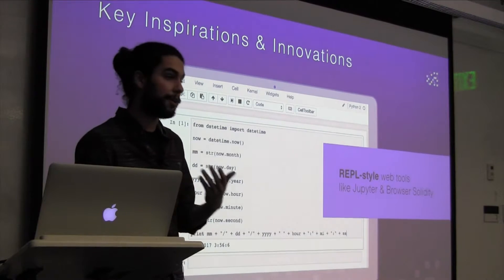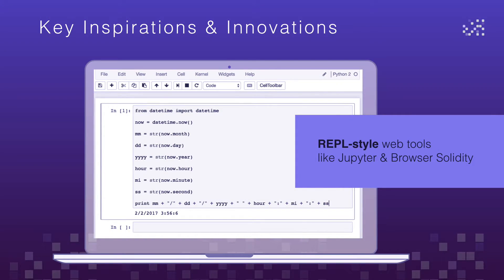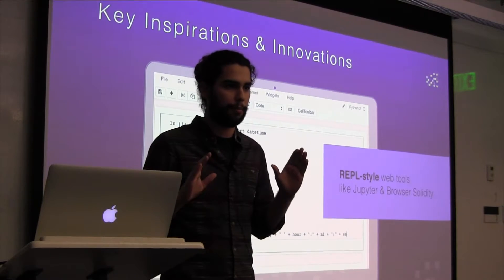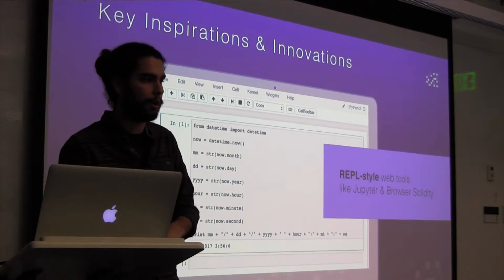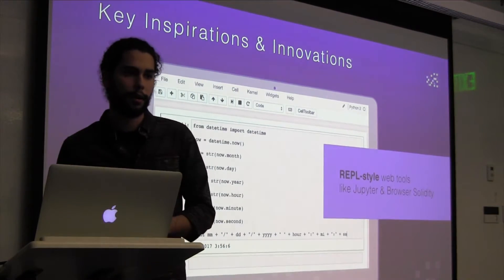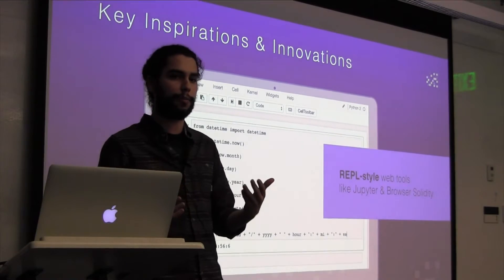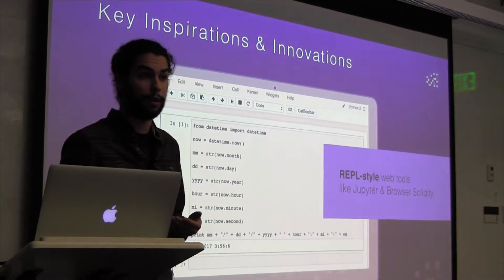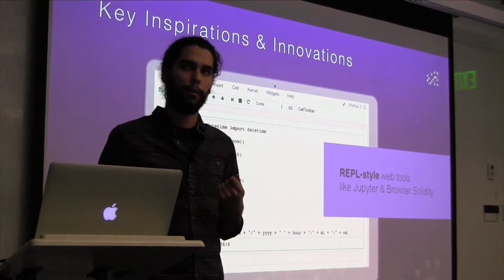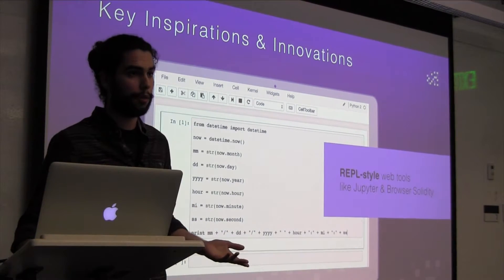Another inspiration is REPL style web tools. I'm sure many of you have used Browser Solidity before — Browser Solidity is awesome. Another one for Python is Jupyter. We think this is really cool. As soon as you create a terminal style developer tool, everybody's going to want a text editor. We like the idea of being able to pop up a very minimal but very rich programming environment where you can have JavaScript tools like ethdeploy, ethjs, web3, and Dapple's tools all loaded in context — just jump right into it in the web experience, going from nothing to programming in the environment instantly.